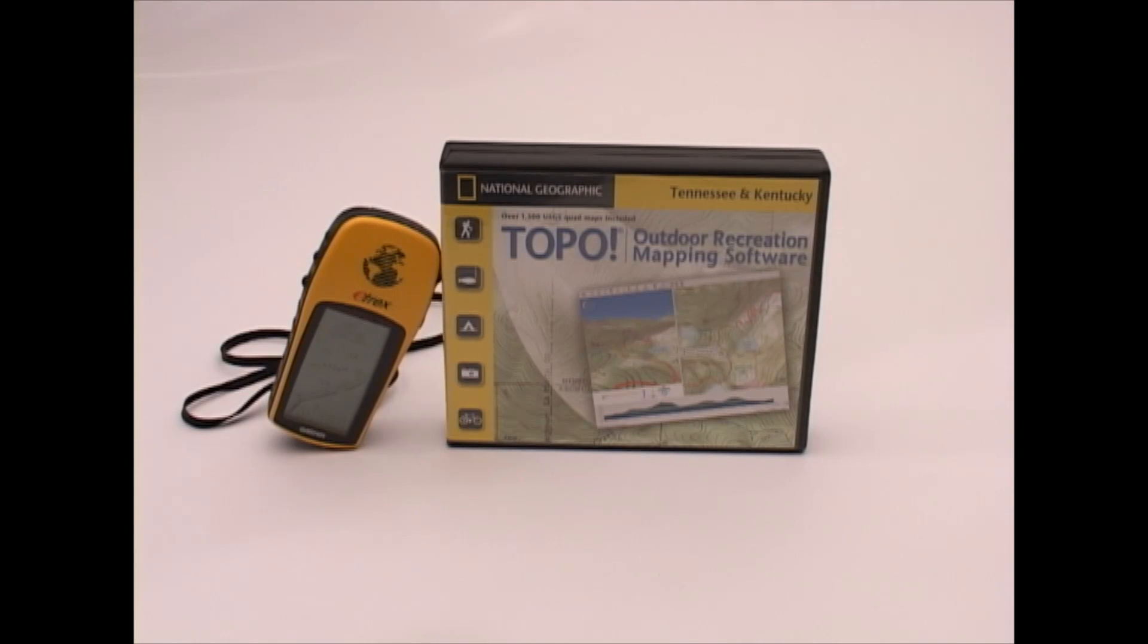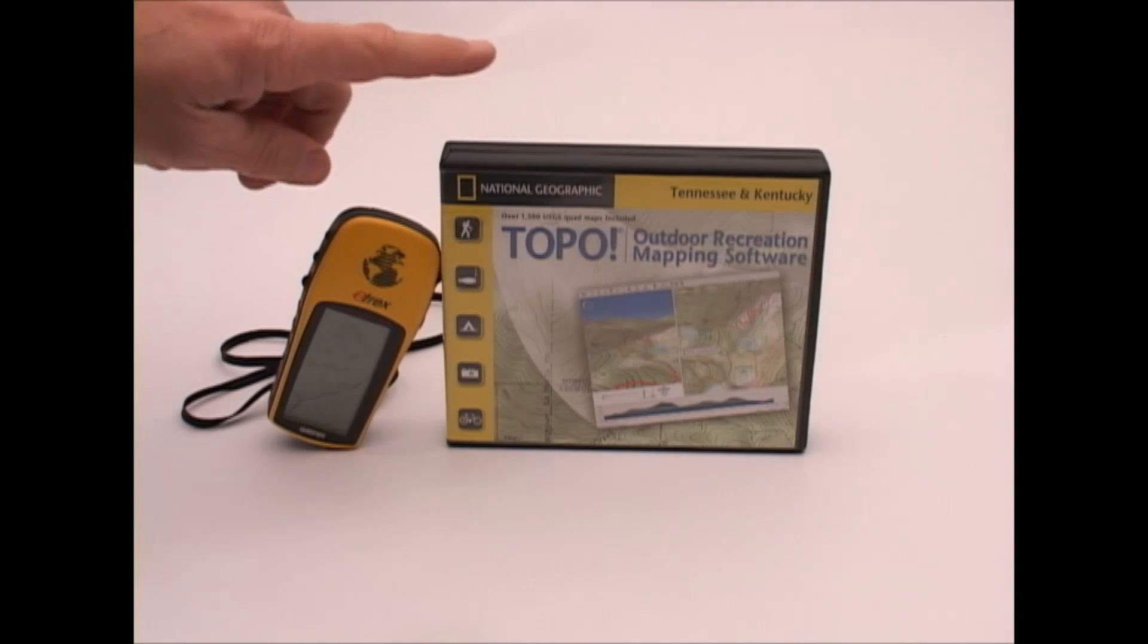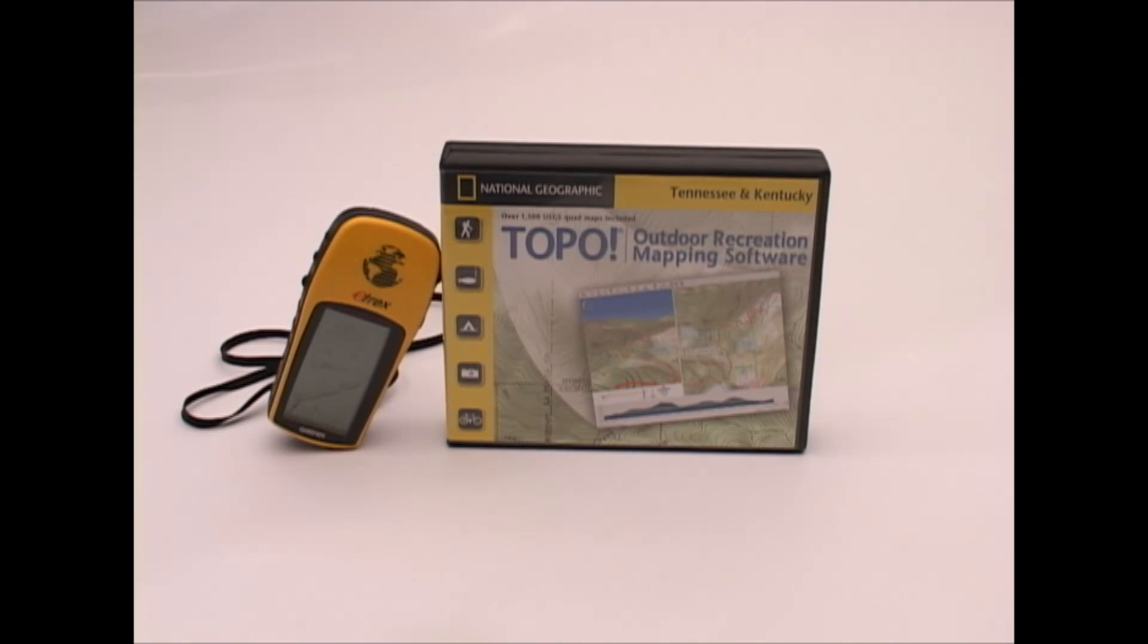Today we're talking about two products that are part of the core of my hunting navigation system. The first is the E-TREX GPS from Garmin, and the second is the Topo State series of mapping software from National Geographic. I'm talking about these two products together for a reason, and that is because they work hand in hand, and I see them as almost being linked.